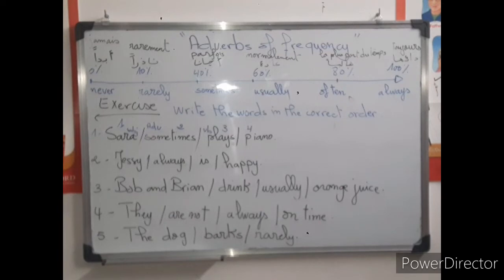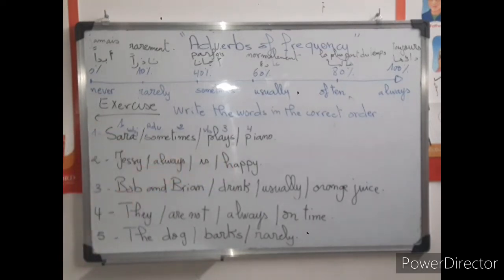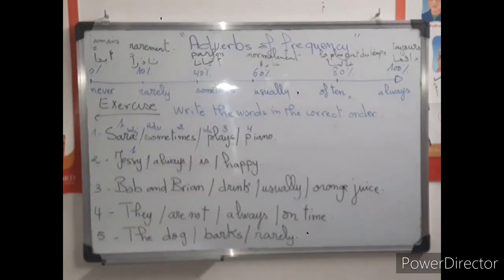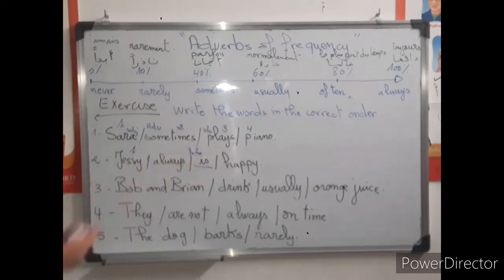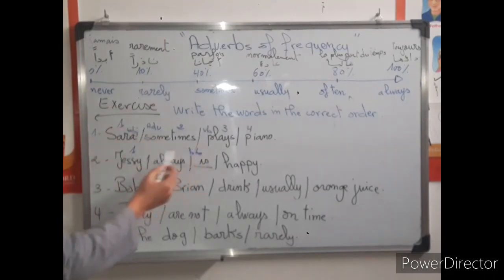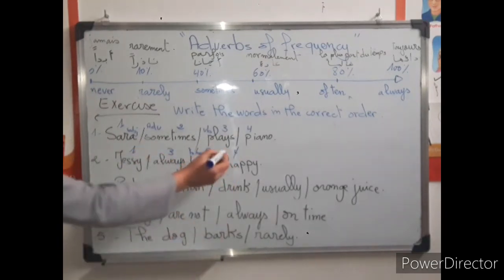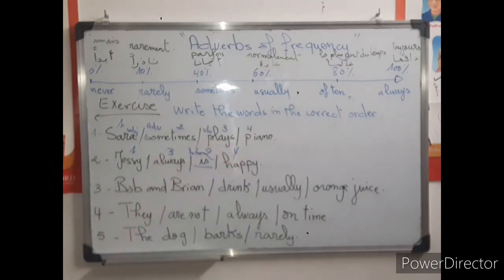Number two: Jesse always is happy. Jesse is the subject — number one. We have always, is, and happy. The verb is is — verb to be — so verb to be comes first: is is number two. Then the adverb always is number three. Finally, the adjective happy is number four. Jesse is always happy.